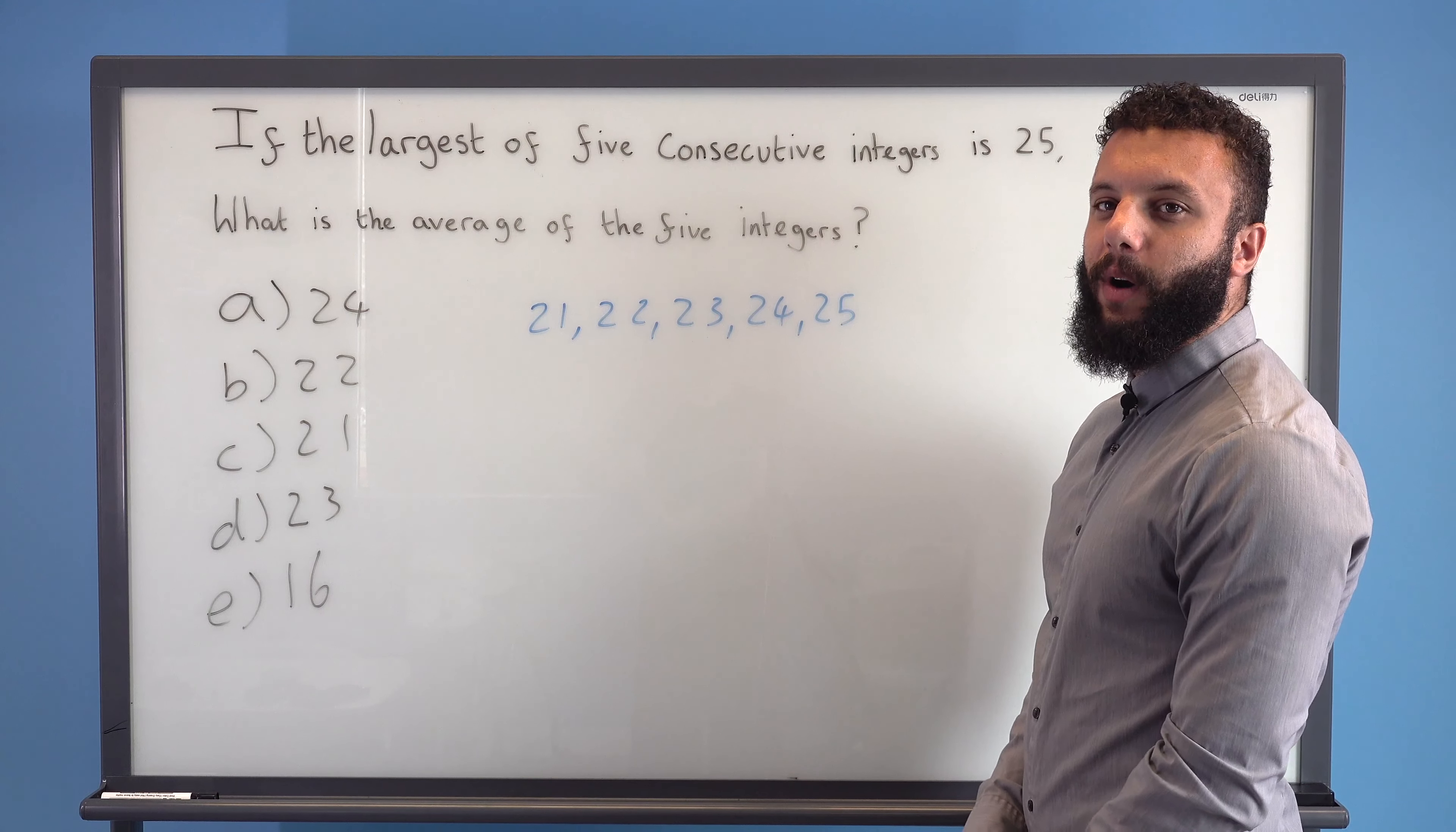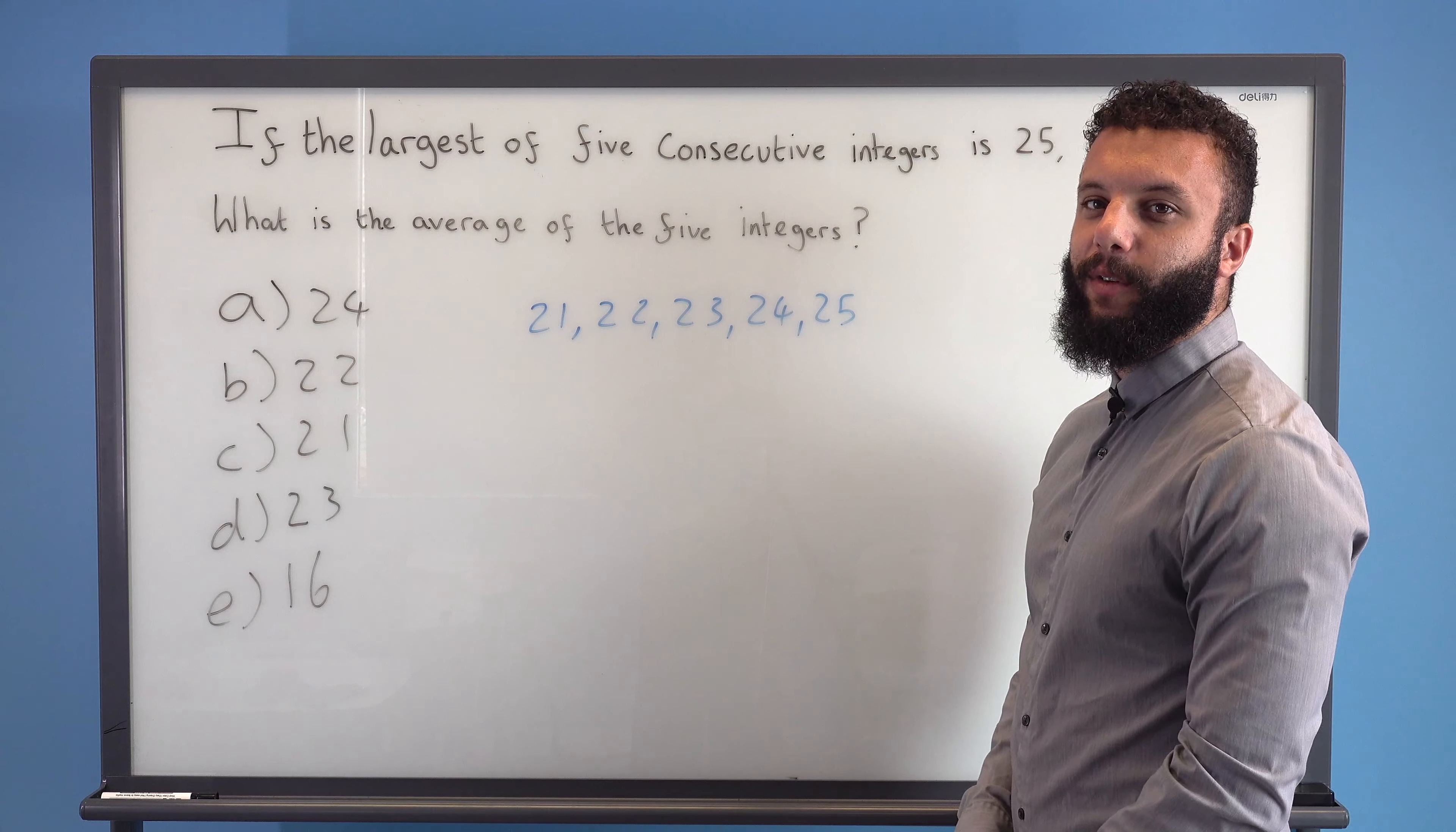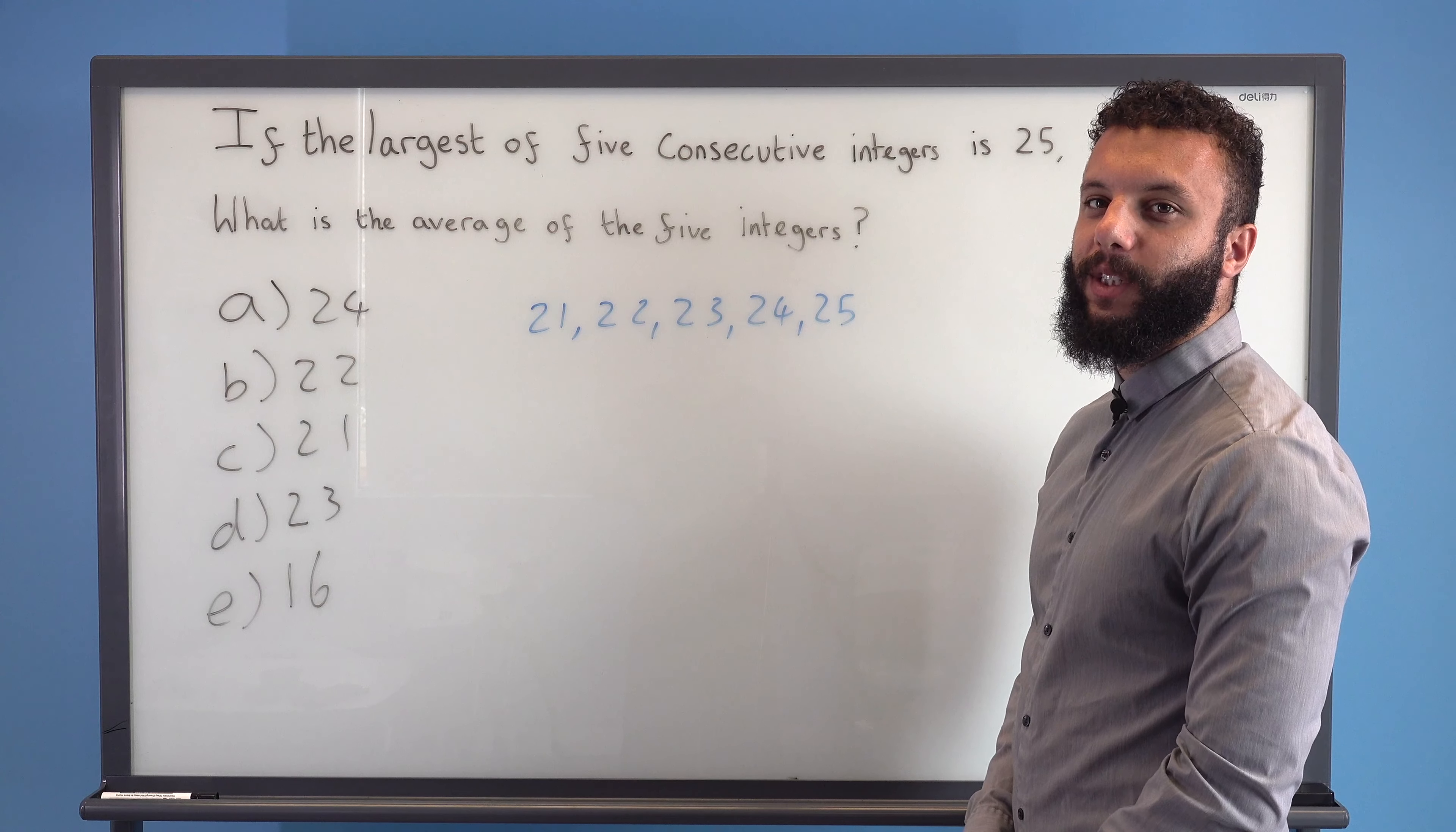So if we were to add all of these numbers together and divide by 5 we could find the average, but we've got a much simpler way we can do that in this question.